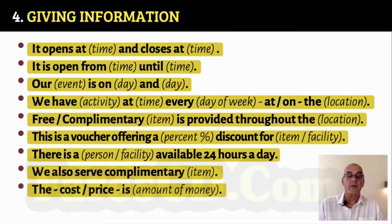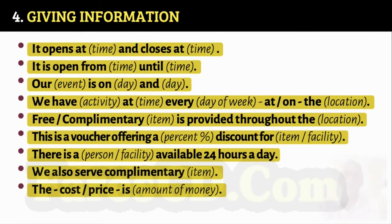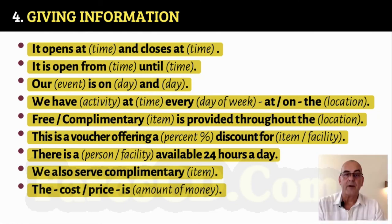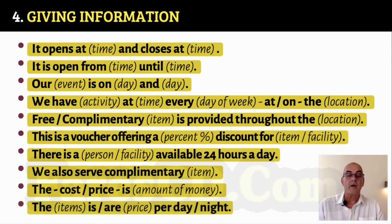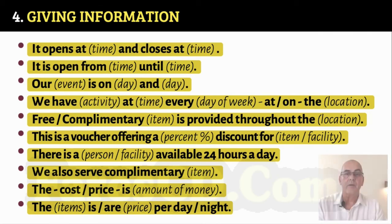This is a voucher offering a [percent] discount for [item/facility]. For example: This is a voucher offering 25% off for a facial cleansing treatment. There is a [person or facility] available 24 hours a day. For example: There is a call service available 24 hours a day. The cost is [amount] or the price is [amount]. For example: The price is $125 per night. The car rental is $80 per day.